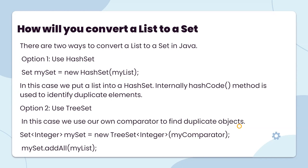How will you convert a list to a set? There are two ways to convert a list to a set in Java. First option: use HashSet — Set mySet equals new HashSet with the list passed in. In this case we put a list into a HashSet; internally hashCode of mySet will be used to identify duplicates. Second option: use a custom comparator to find duplicate objects — Set<Integer> mySet equals new TreeSet with a comparator.